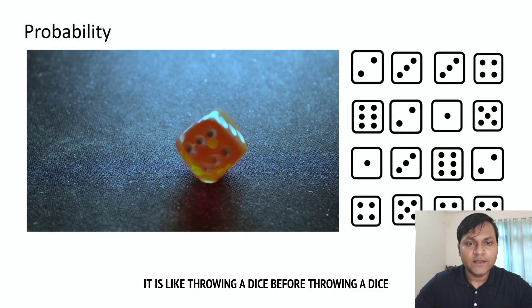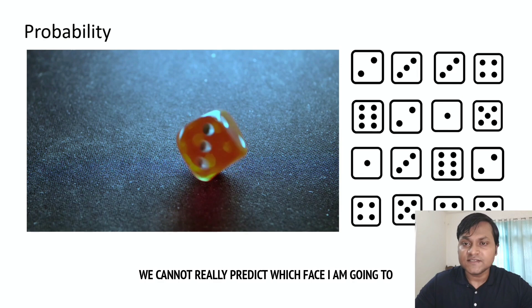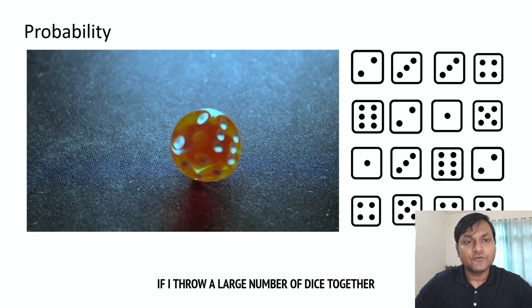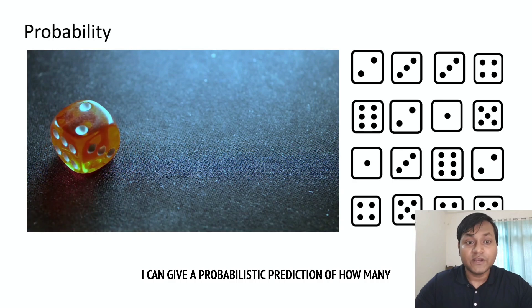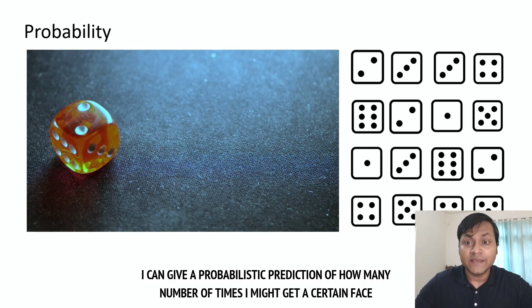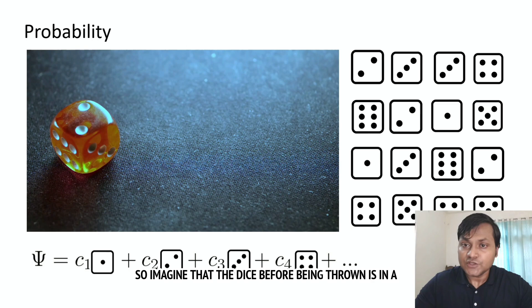It's like throwing a dice. Before throwing a dice, we cannot really predict which phase I am going to get. However, if I throw a large number of dice together, I can give a probabilistic prediction of how many number of times I might get a certain phase. So imagine that the dice before being thrown is in a linear superposition of all of these phases.